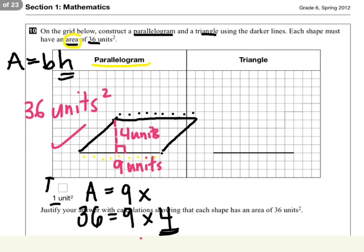Now I want you to try the triangle. So we know area of a triangle is equal to base times height divided by two.